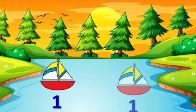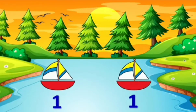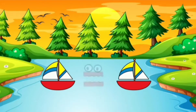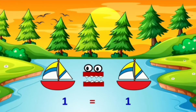Now see the next one. Here is only one boat, and here is also one boat. One is equal to one, isn't it? So which sign will be here? Equal to. There will be an equal to sign.